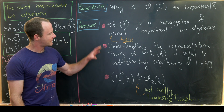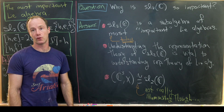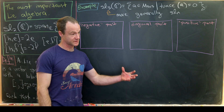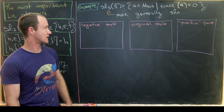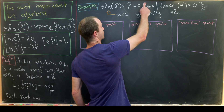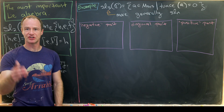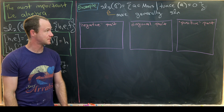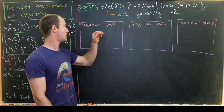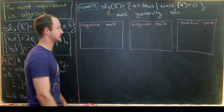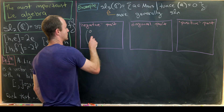Now we'll focus on SL2 as a subalgebra inside other important Lie algebras. The most obvious first example after SL2 is SL3. As a matrix representation, SL3 is made up of all 3×3 matrices where the trace is zero — the trace being the sum of the diagonal elements. You can think about most Lie algebras in their matrix form as being separated into a diagonal part, a negative part, and a positive part.